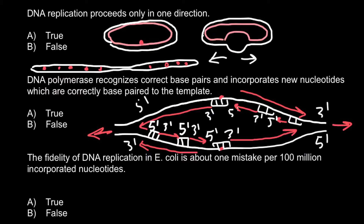The next statement: DNA polymerase recognizes correct base pairs and incorporates new nucleotides which are correctly base-paired to the template. Is it true or false? Basically this is a very simple question asking whether we call this enzyme a polymerase or not — that extends new strands of the DNA. And the answer is: it is true.